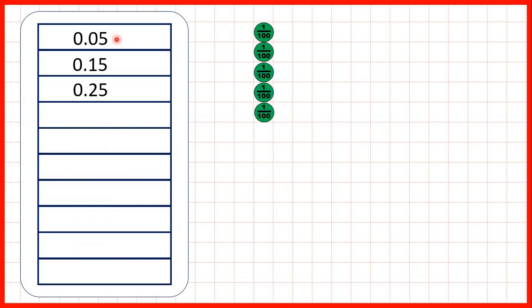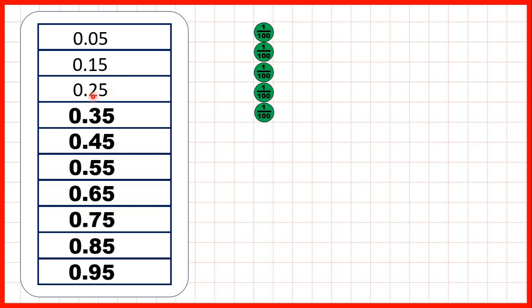Now 0.05, 0.15, 0.25. What are our next seven numbers? Well we can see that here we're counting in tenths. And you'll notice counting in tenths isn't much more difficult than counting in ones. So on our place value counters we can just see that we're adding one tenth.